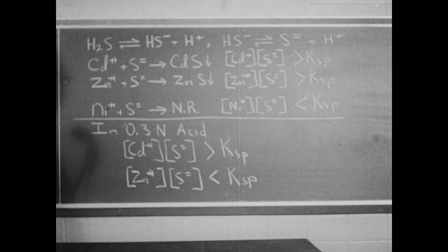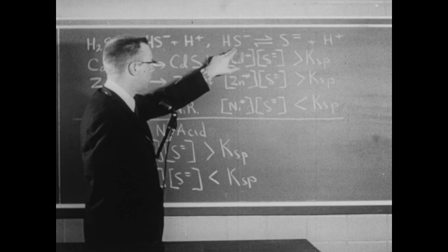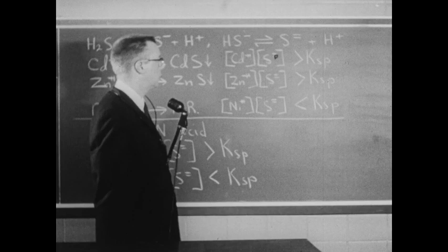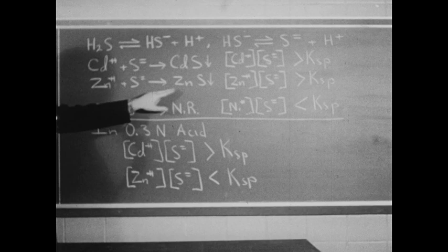Hydrogen sulfide ionizes in two steps: the first producing HS⁻ ions and hydrogen ions, and then these HS⁻ ions ionize to a very small extent to produce some sulfide ions and some more hydrogen ions. When hydrogen sulfide is used as a precipitant, it's these few sulfide ions that are reacting. This low concentration of sulfide ions is sufficient, as we saw, to cause the precipitation of cadmium sulfide and of zinc sulfide.